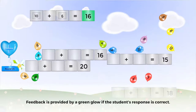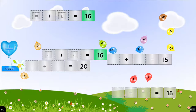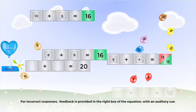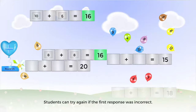If correct, the square will glow green. If the equation is solved incorrectly, the right box will show the incorrect response in red with an auditory cue, along with the correct response in green. Students can try problems over if they have chosen incorrect solutions.